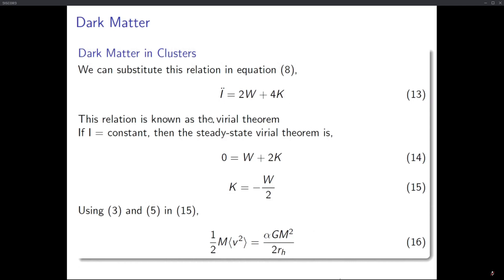If I is constant, then d²I/dt² equals zero, and we get W plus 2K equals zero, or K equals minus W/2. This is the virial theorem in its classical form. A constant I also means we are in a steady state universe — which is what Einstein was pursuing when he introduced the cosmological constant.